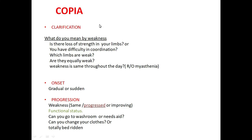Whenever a case of limb weakness comes in the exam, I suggest you use this mnemonic: COPIA. C for clarification, O for onset, P for progression, I for intermittency, and A for associated factors. You will start with clarification.